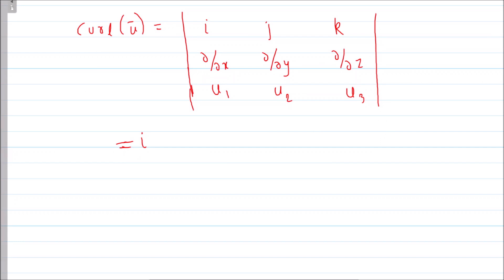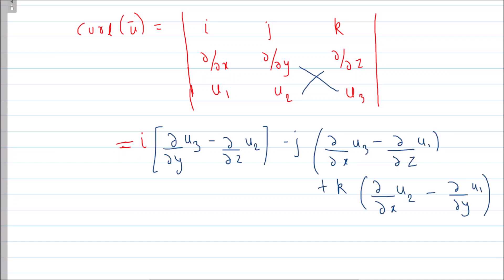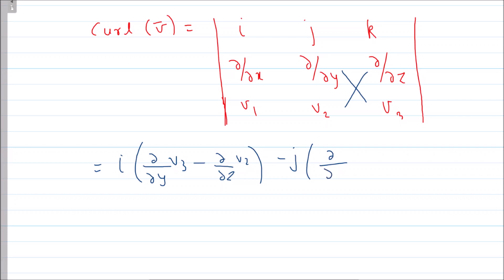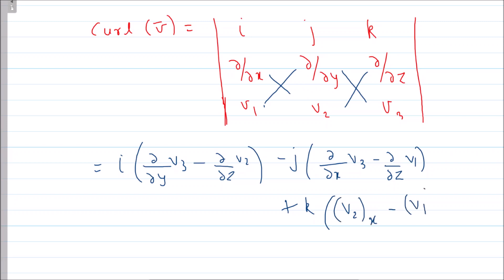By definition, curl(u) is computed using the determinant with rows i, j, k, then the nabla operator, then u. This gives: i(∂u3/∂y − ∂u2/∂z) − j(∂u3/∂x − ∂u1/∂z) + k(∂u2/∂x − ∂u1/∂y). Similarly, curl(v) = i(∂v3/∂y − ∂v2/∂z) − j(∂v3/∂x − ∂v1/∂z) + k(∂v2/∂x − ∂v1/∂y).